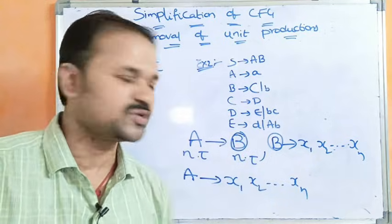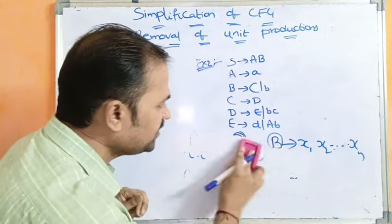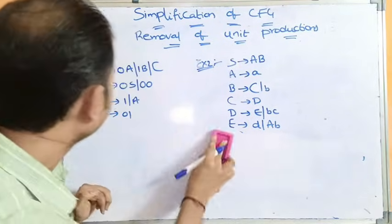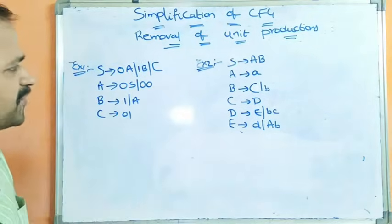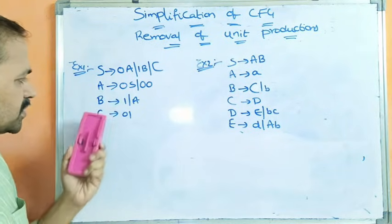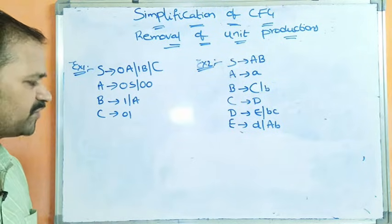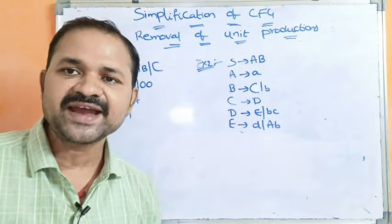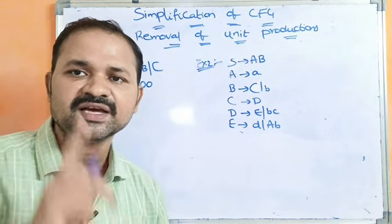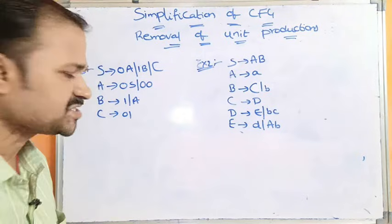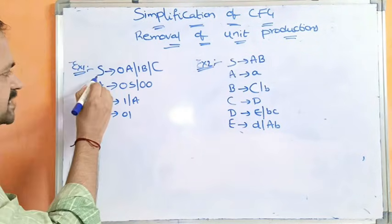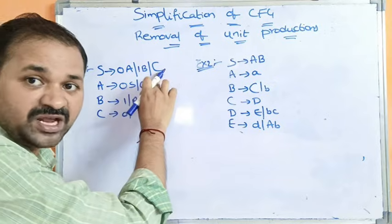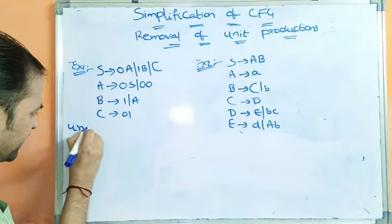Now let us solve two examples. If we solve these two examples, then in the examination you can solve any example. The first example has the following productions: S produces 0A or 1B or C. A produces 0A or 00. B produces 1 or A. C produces 01. First, we have to identify the unit productions. A unit production has only one non-terminal on the left-hand side and only one non-terminal on the right-hand side.